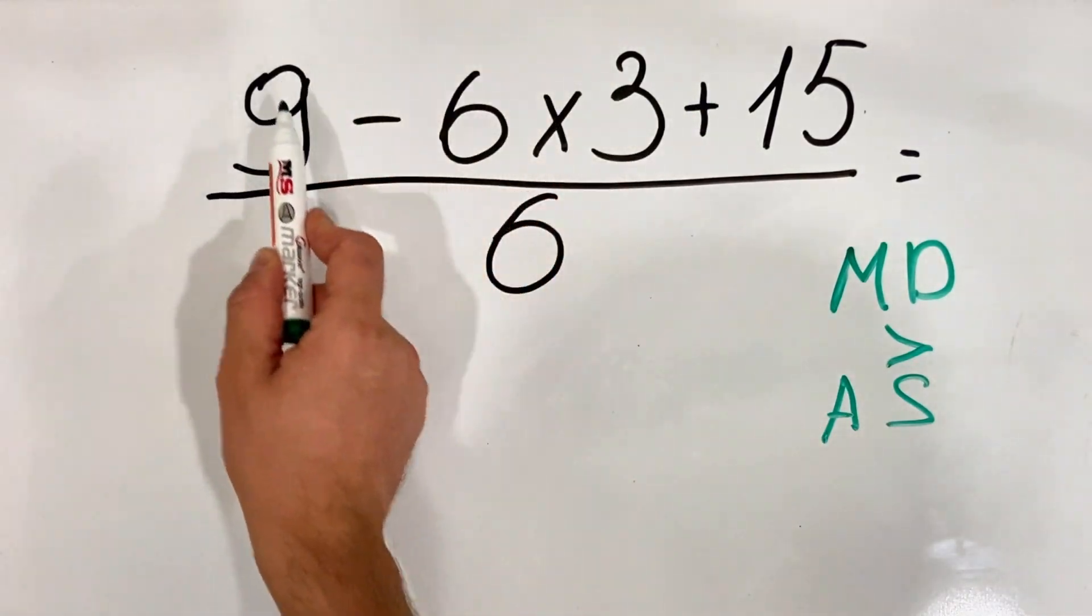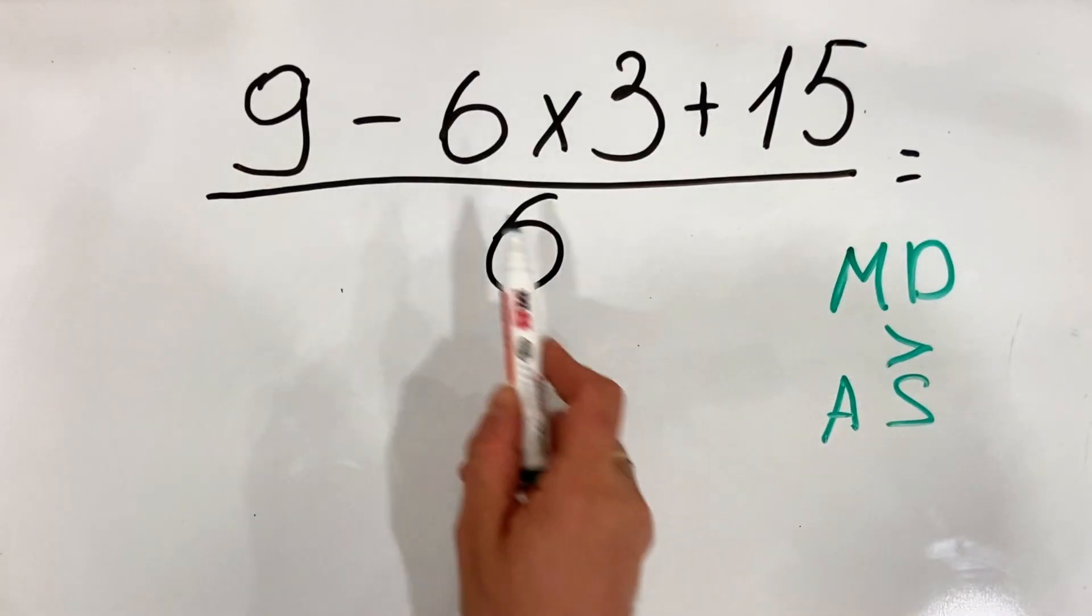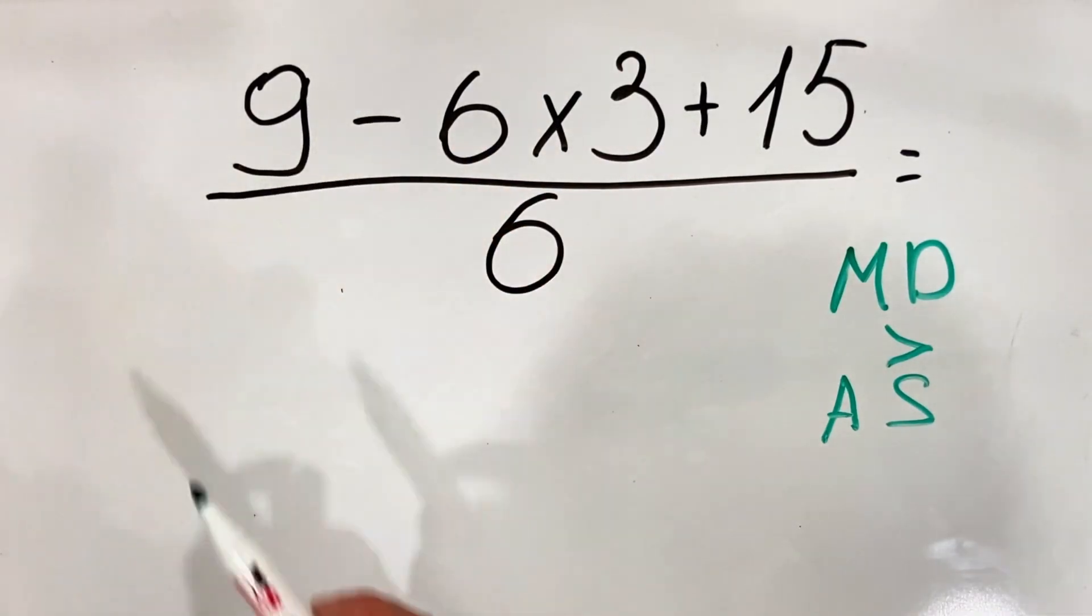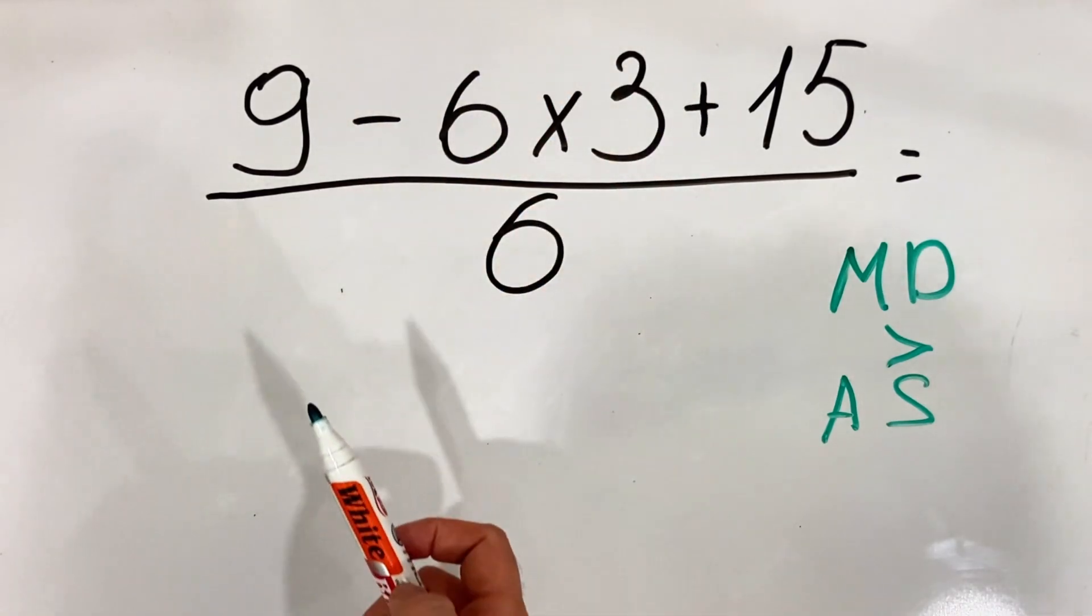In our case for the numerator we have one multiplication and then we have addition and subtraction, meaning first we'll do the multiplication and then we'll do the addition and subtraction.